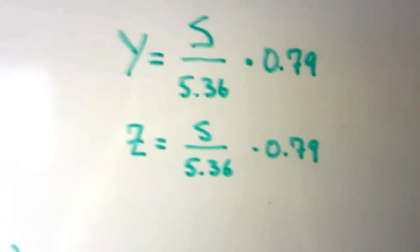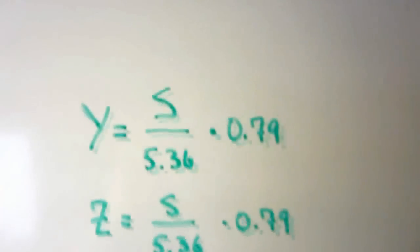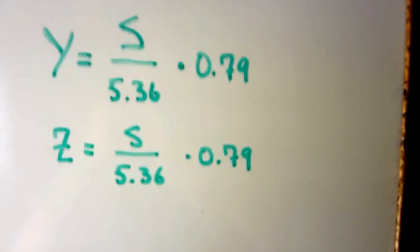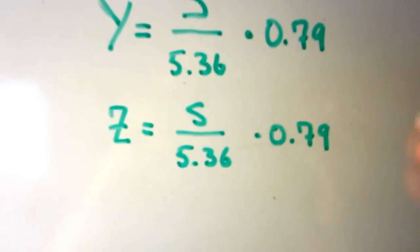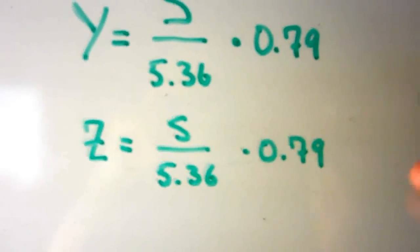Actually, the canine value should be 0.89 — that was a little mistake.